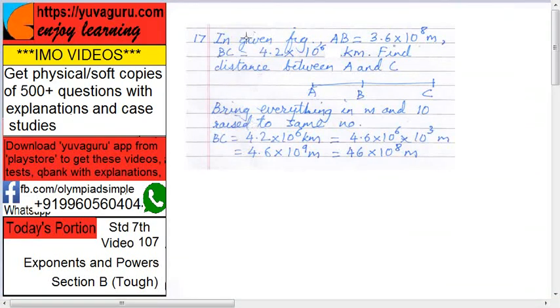In the given figure, AB equals to 3.6 into 10 raised to 8 meters, this is AB. BC equals to 4.2 into 10 raised to 6 kilometers, this is BC. Find the distance between A and C.